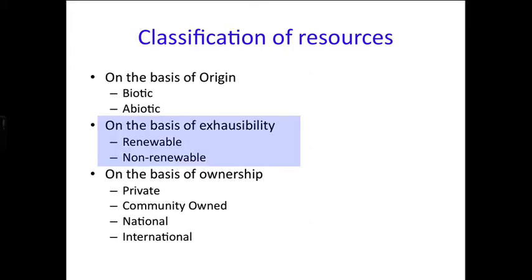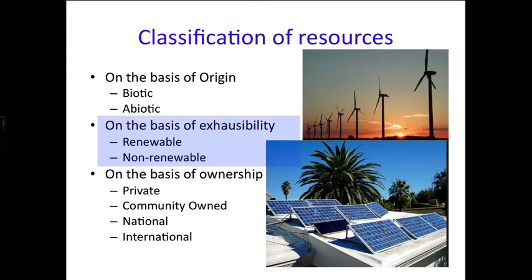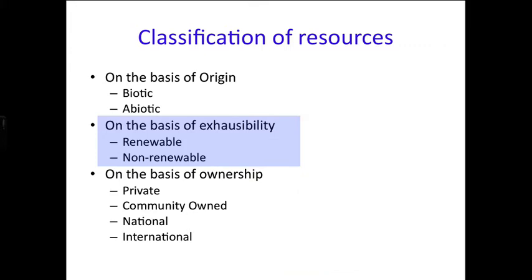On the basis of exhaustibility, resources are classified as renewable and non-renewable. Renewable resources can be renewed, replenished, or reproduced by physical, chemical, or mechanical processes — for example, solar and wind energy. These can be further divided into continuous and biological types.